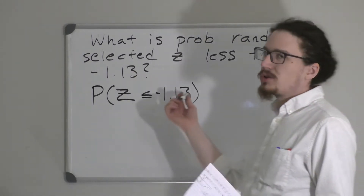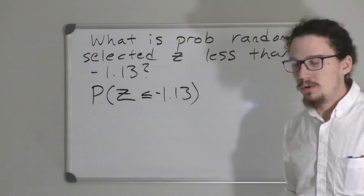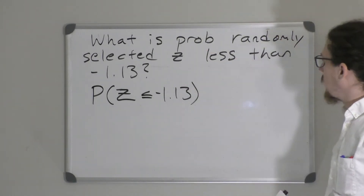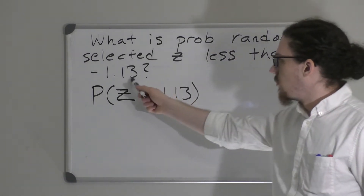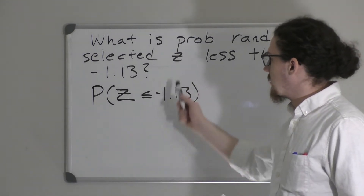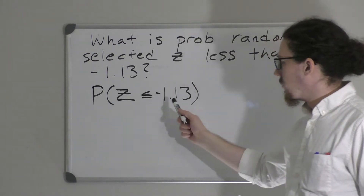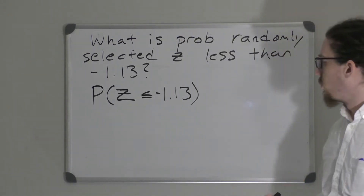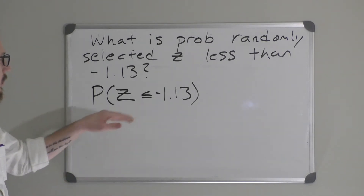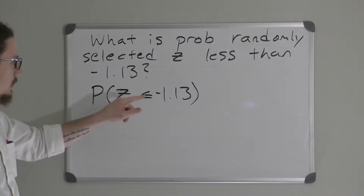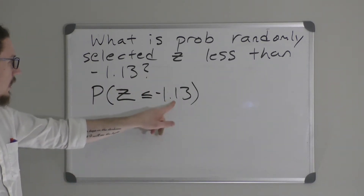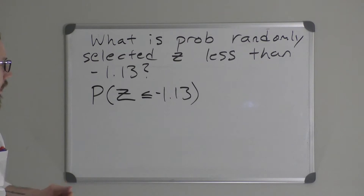This one is pretty straightforward. What is the probability of randomly selecting a Z less than negative 1.13? Since it's less than, we write: probability that Z is less than or equal to negative 1.13.